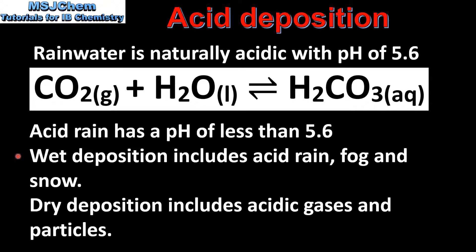There are two types of acid deposition. There's wet deposition which includes acid rain, fog and snow. And there's dry deposition which includes acidic gases and particles. In this video we'll be looking at wet deposition.